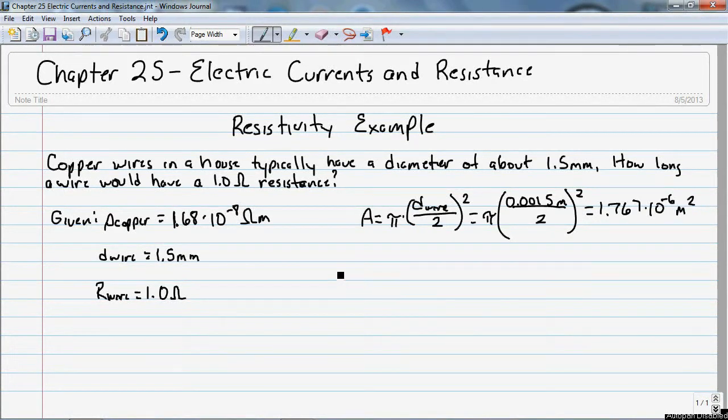Now we can find the length of the wire by rearranging the resistance formula. So the length of the wire is equal to the resistance that we want times the cross-sectional area divided by resistivity.